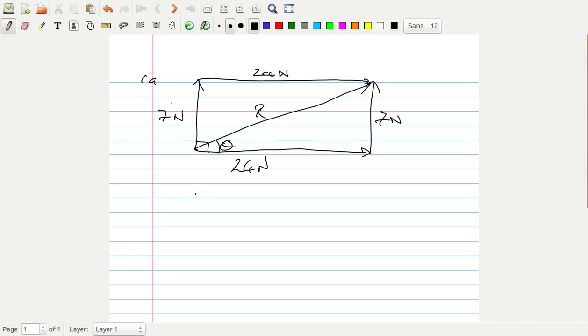Then from Pythagoras' rule, we can say that R squared equals 24 squared plus 7 squared, which equals 625. So R equals the square root of 625, which is 25.